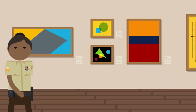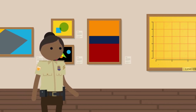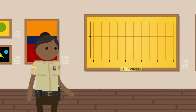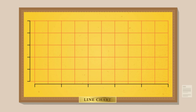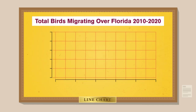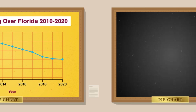Suppose we're ecologists working for the U.S. Fish and Wildlife Service and track the numbers and species of all the birds migrating over Florida in the last decade. A line chart helps tell a story involving time — like how the number of birds each year has changed over the decade. With time on the horizontal axis and the number of birds on the vertical axis, we can put a dot to mark the total number of birds for each year, then connect the points with a line to help us see any trends.